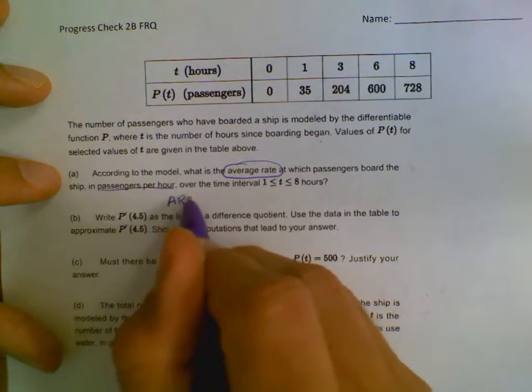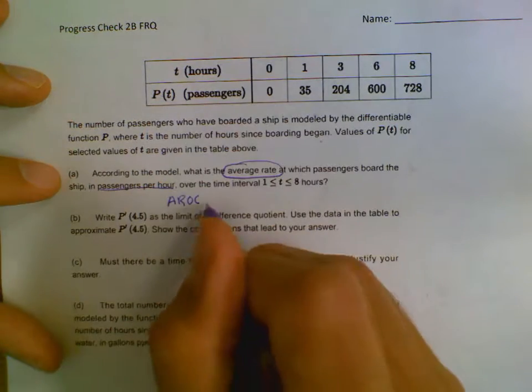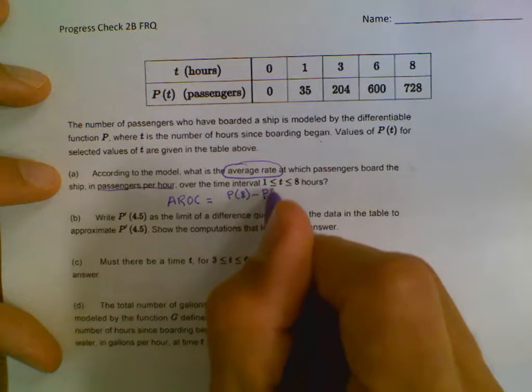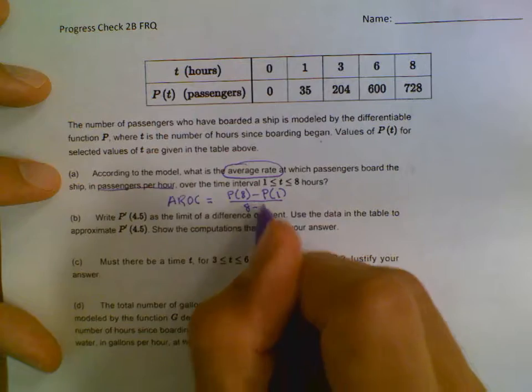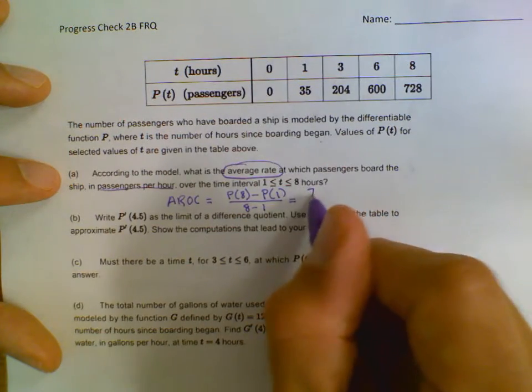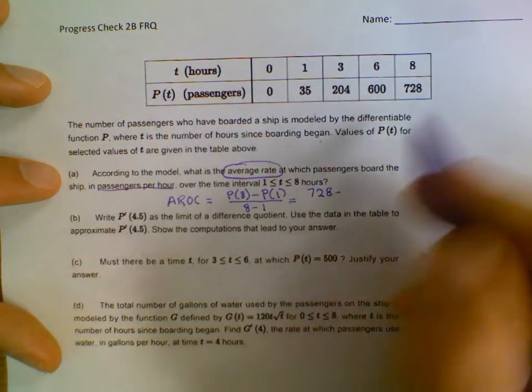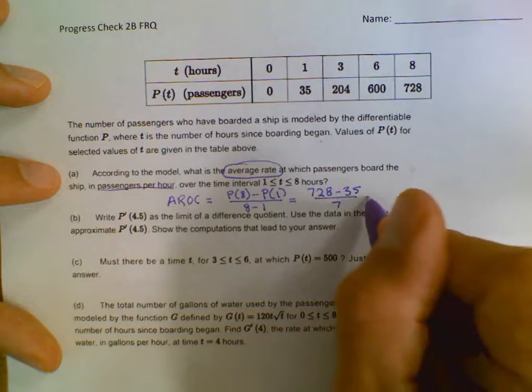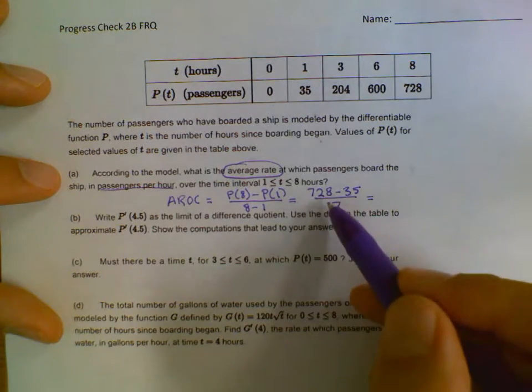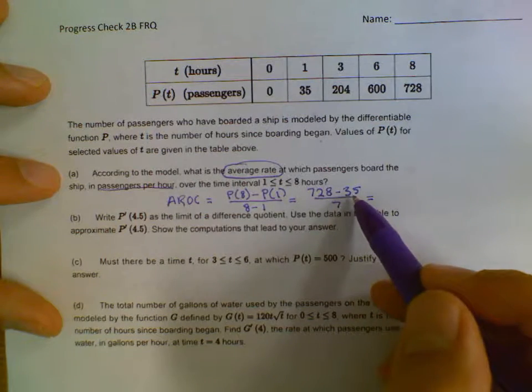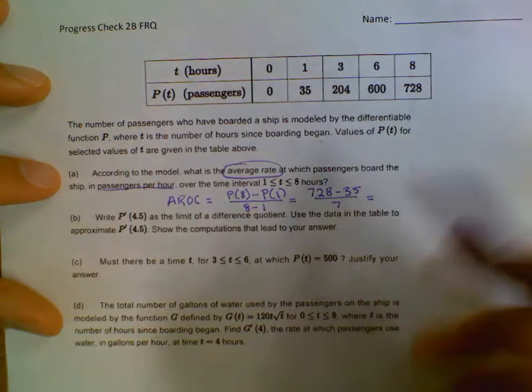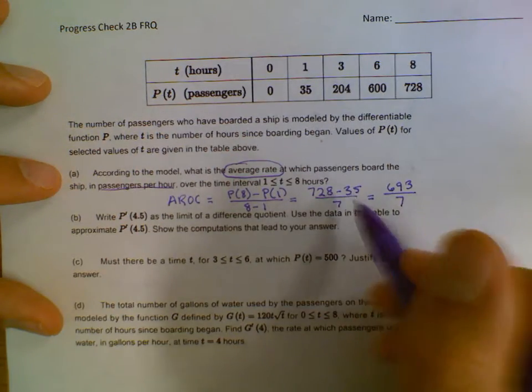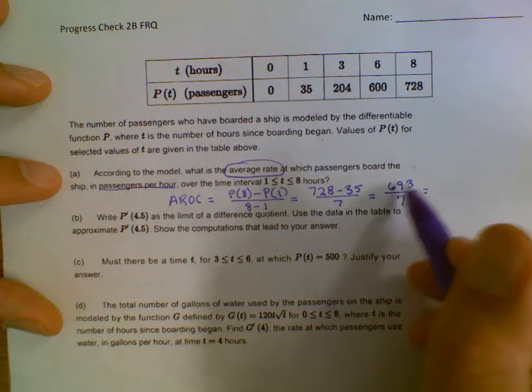So average rate of change on 1 to 8 would be the P value at 8 minus the P value at 1 all over 8 minus 1. The P value at 8 is 728. The P value at 1 is 35. So 8 minus 1 is 7. Now I have 728 minus 35. What is that? 693, maybe? I'm doing that kind of quick, but I think that's right.